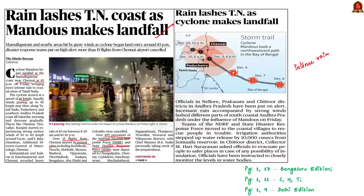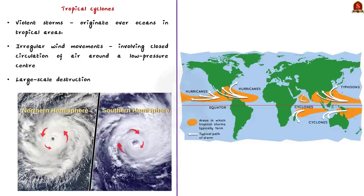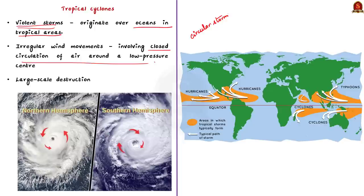In this backdrop, let us understand some of the basics about tropical cyclones, its formation and its landfall. A tropical cyclone is nothing but an intense circular storm that originates over warm tropical oceans and moves over to the coastal areas. They are irregular wind movements involving closed circulation of air around a low pressure center, characterized by low atmospheric pressure, high winds and heavy rain. That is exactly why they can cause large scale destruction.